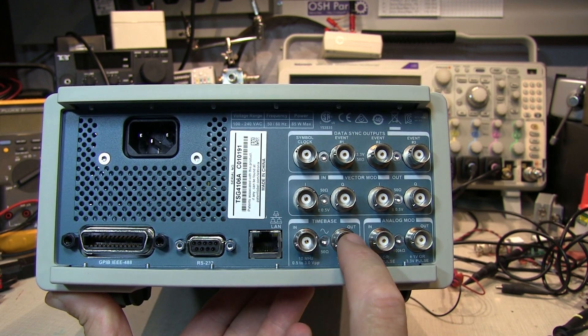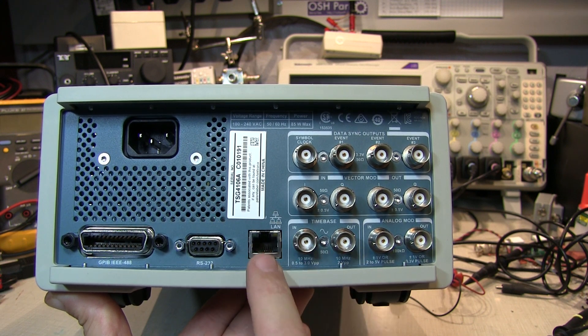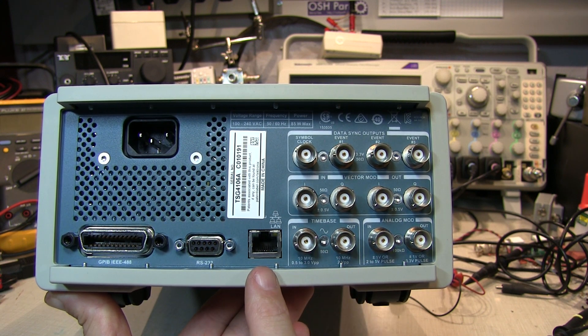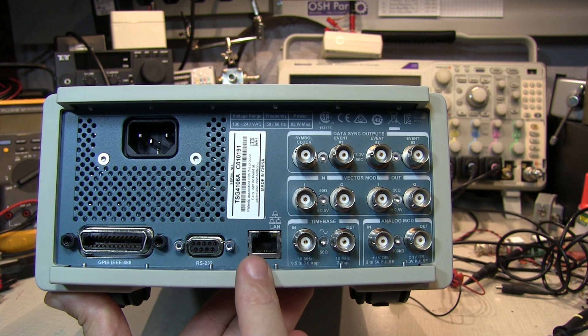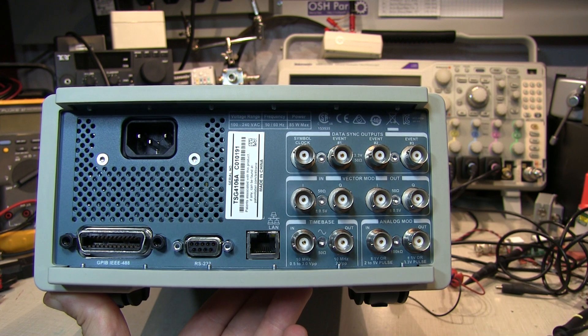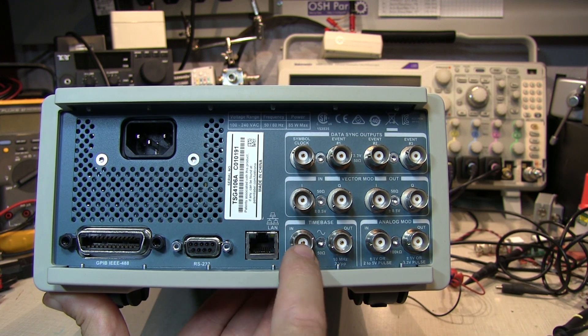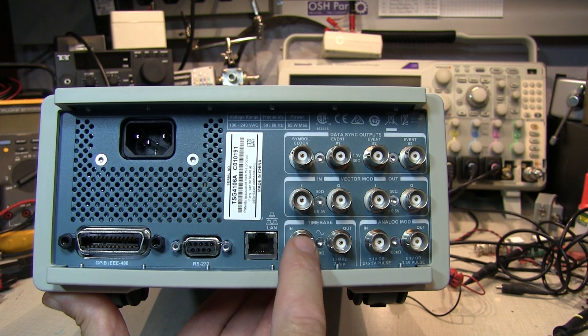There are input and output here for the reference time base. This unit has got an ovenized reference so it's a very stable reference so you most likely use the output here to become the reference for other instruments in the lab. But you do have the ability of tying in an external reference if you've got that in your lab and you want to tie this to that.